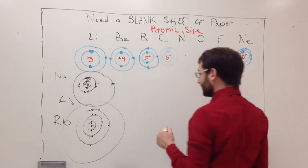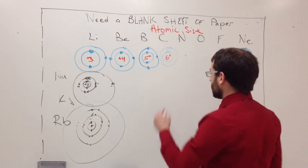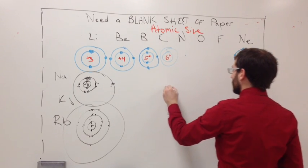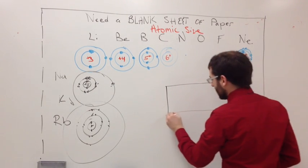So as you move down, what's going to happen to your trend is it's going to get bigger. As you move across it gets smaller. And there's an easy way to represent this, to remember, is to draw a box. And say alright, this is a periodic table.